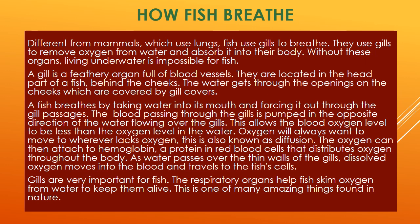This allows the blood oxygen level to be less than the oxygen level in the water. Oxygen will always want to move to wherever lacks oxygen — this is also known as diffusion. The oxygen can then attach to hemoglobin, a protein in red blood cells that distributes oxygen throughout the body. As water passes over the thin walls of the gills, dissolved oxygen moves into the blood and travels to the fish's cells.